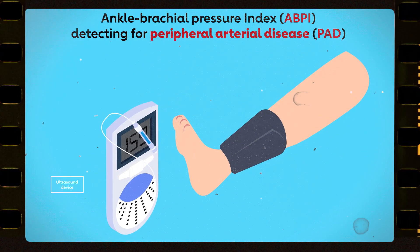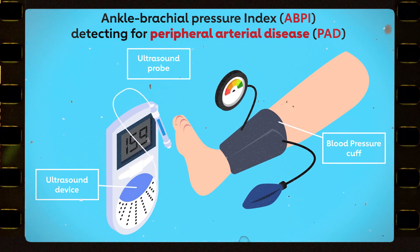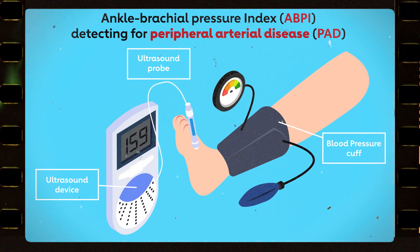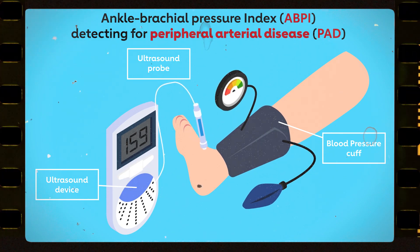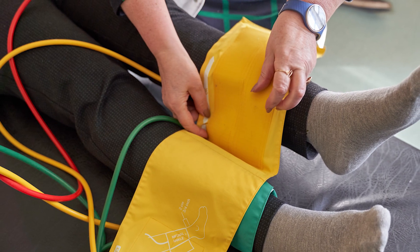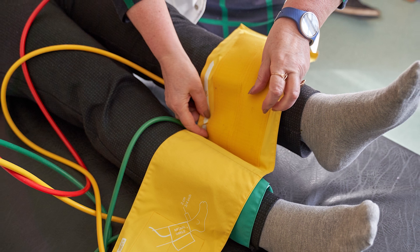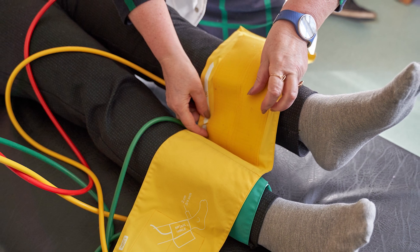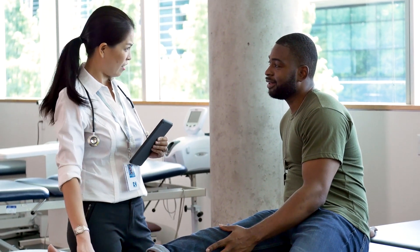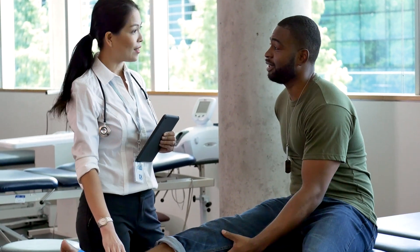Your physical exam may include something called an ankle brachial index or ABI. This exam, which doesn't hurt at all, takes just a few minutes and compares the blood pressure in your lower legs to the blood pressure in your arms. If your ABI is abnormal, the doctor may recommend additional tests.